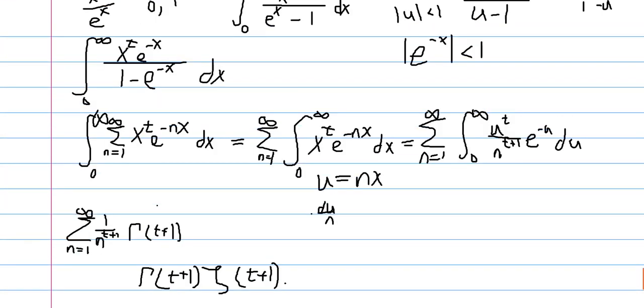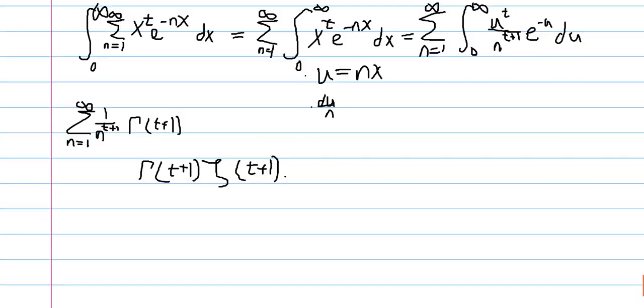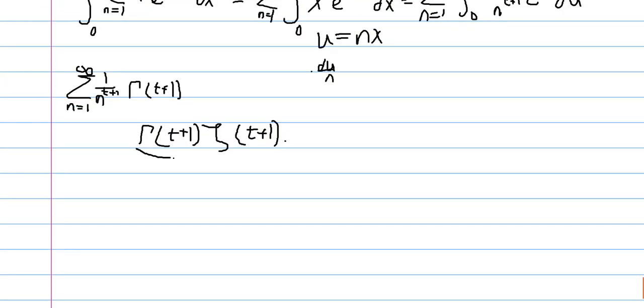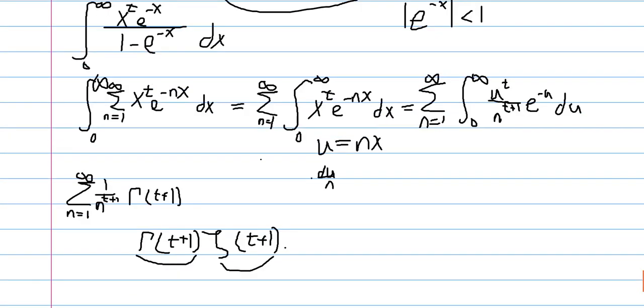And we are done. So this integral, the integral from 0 to infinity of x to the t over e to the x minus 1, is equal to gamma of t plus 1 times the Riemann zeta of t plus 1. Thank you for watching and I'll see you in my next video.